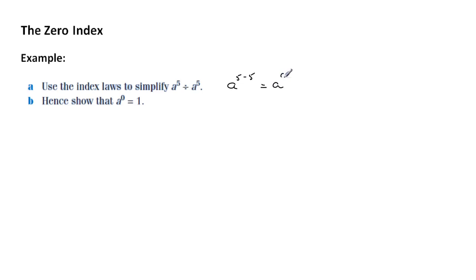Now the question is what does this actually mean? Well we're going to show how a to the zero actually equals one, and one way that we can do this is to take this expression and write it out in expanded form.